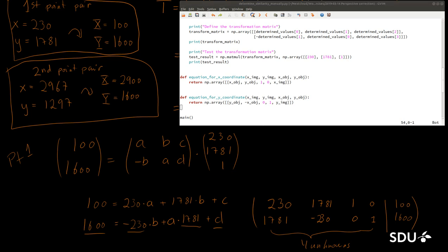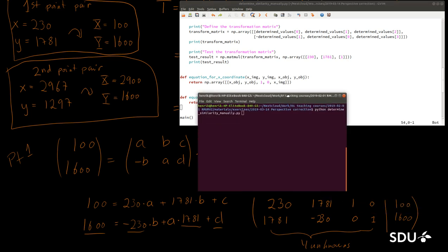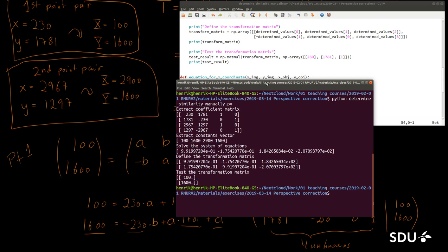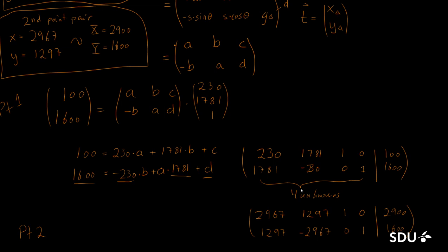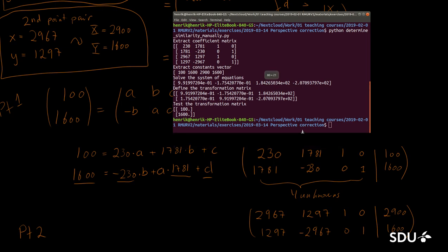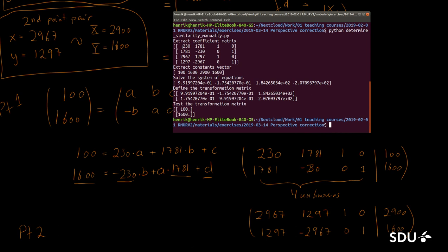If we run this program, we get the following matrix. We can see that we have a matrix containing the exact same elements as the one here on the coefficient side for both point pairs. And we have our constant vector which is given here. By solving this system of equations, we get a solution where this should be the a value, this should be the b value, and this is the translation parts.